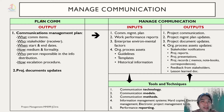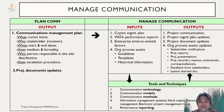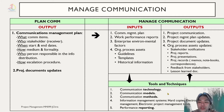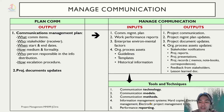The output from plan communication becomes the input for manage communication, which includes the communication management plan and work performance report. The inputs also include enterprise environmental factors and organizational process assets. The tools and techniques used are communication technology, communication models, communication methods, information management systems such as hard copies or electronics, and performance reporting.